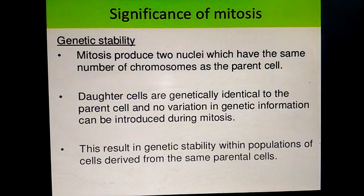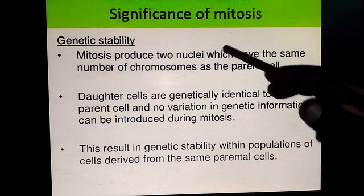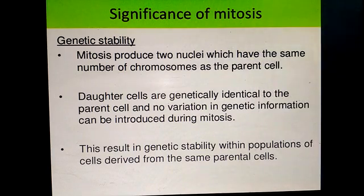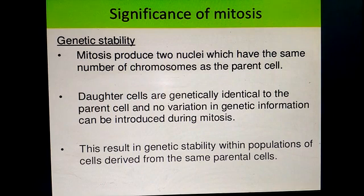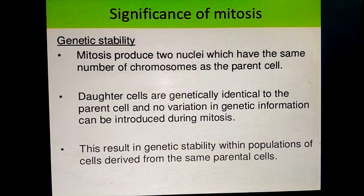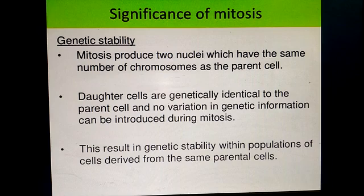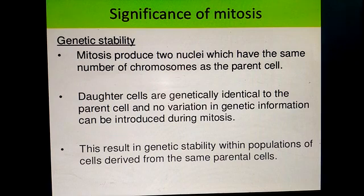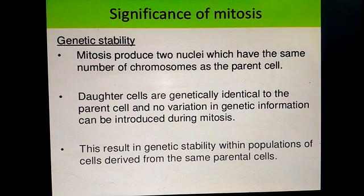What is the significance of mitosis? Mitosis produces two nuclei which have the same number of chromosomes as the parent cell. Parent cells are multiplied by the end of cytokinesis. For example, we start our life from a single cell, which develops into a multitude of cells. That is how we are formed as a multicellular organism.